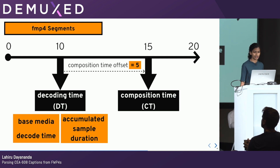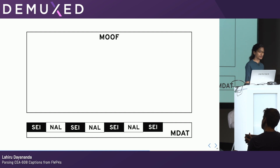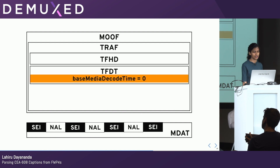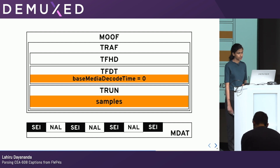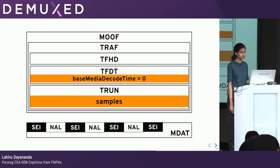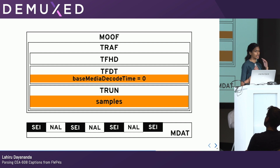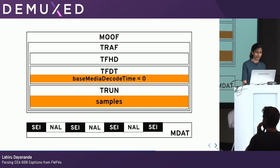So where do we find the samples? Going back to our example, the Movie Fragment Box comes back in handy. It has a track fragment box, which has a header box, a decoding time box with a base media decode time, and a track run box with the samples. The sample is actually a piece of metadata that relates to a timestamp, and it also tells you where to look in the MDAT for that piece of information.